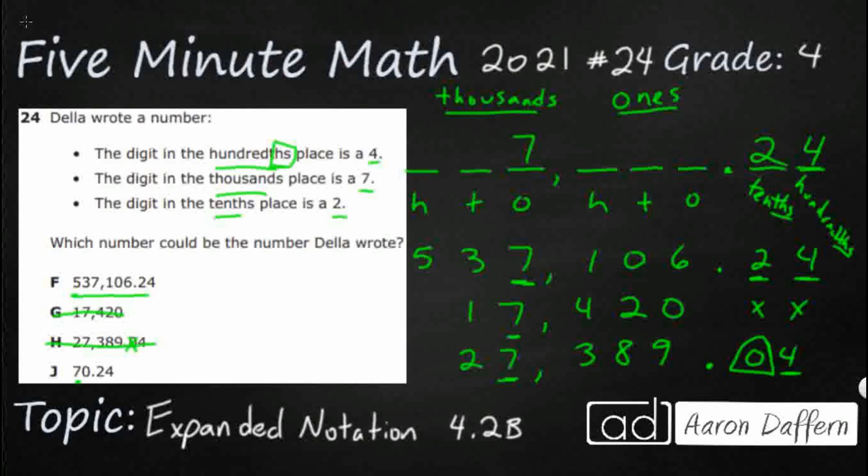And then 770 and 24 hundredths. That's J. Well, I can tell you what the problem is right there: we have the 2 in the tenths, that's great. We have the 4 in the hundredths, that's great. But look, my 7 is in the tens, not the thousands. They've got nothing in the thousands spot. So honestly, if you were to put like H and J together, you might be able to get a good number, but J is incorrect. And so our answer here is F.